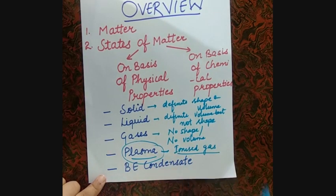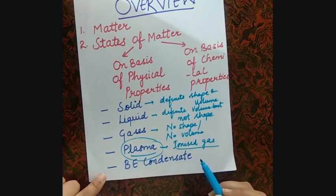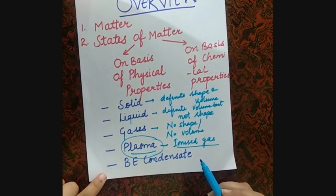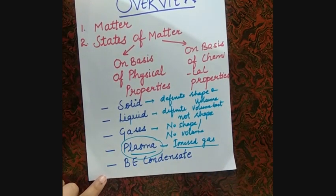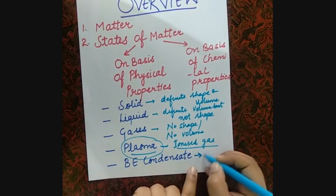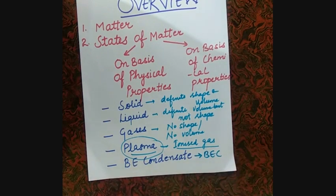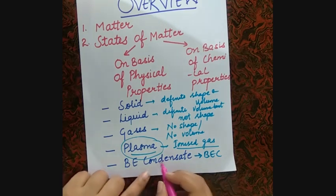After that, the next state is Bose-Einstein Condensate. We also call it BEC. In BEC, this state is formed when we cool any gas.